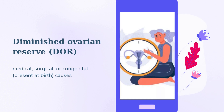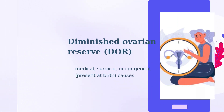Diminished ovarian reserve, DOR. At birth, women have all of the eggs they will ever produce. It's normal for a woman's egg supply to decrease over time. Women with DOR have fewer eggs remaining than normal. This can have medical, surgical, or congenital — present at birth — causes, or it can be unexplained. Women with DOR will produce fewer eggs with fertility treatments, but may still be able to conceive naturally.